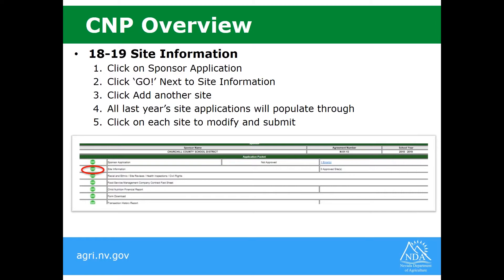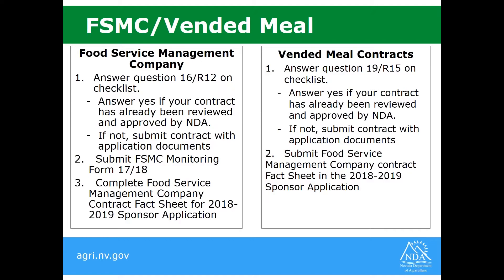For the sponsor application, you're going to log into CNP, choose the sponsor application on the green sidebar, toggle to the 18-19 school year, click new application, choose your sponsor name, and click add new. Here is where you'll modify any information that applies to you as a sponsor. After completing that, you may complete your site information — click the go button next to site information, then click add another site, and all last year's site applications will populate through so you can choose each site, modify them, and submit.